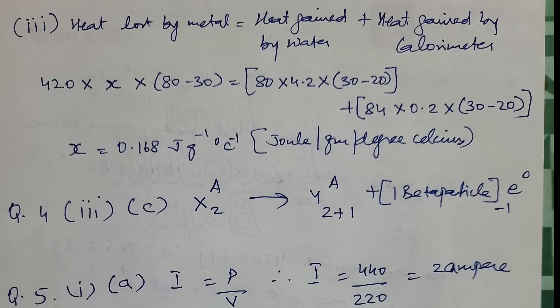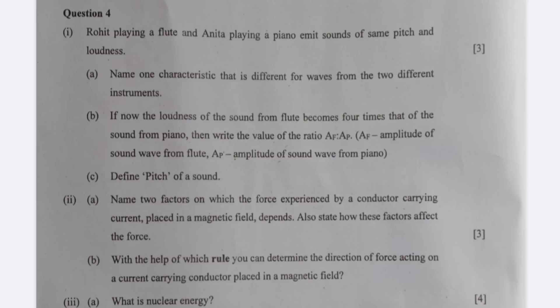Let us move to question number 4. The first answer: name one characteristic that is different for waves from the two different instruments is quality or timber. We had done that as part of our youtube questions also. If now the loudness of the sound from flute becomes 4 times that of the sound from piano then write the ratio AF to AP. Now here AF by AP equals 2 by 1. Define pitch of a sound. Pitch is that characteristic of sound which differentiates two sounds with similar loudness and quality.